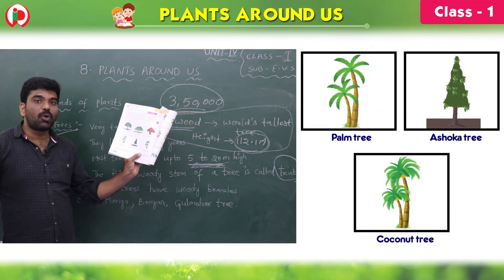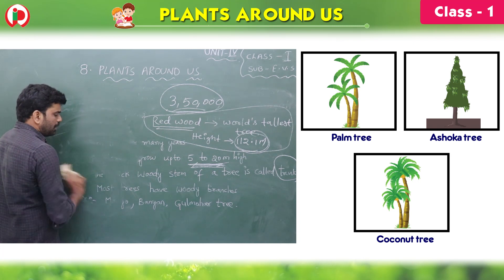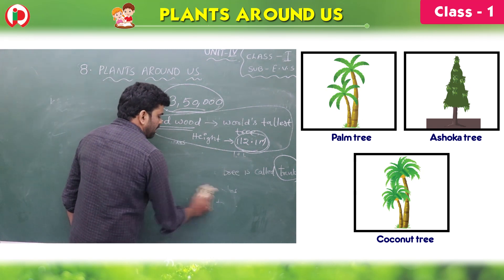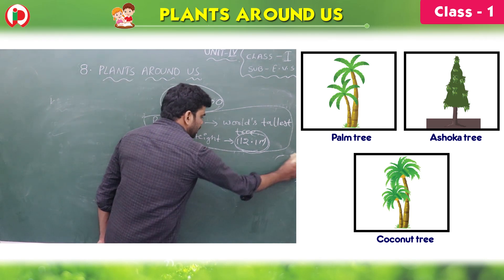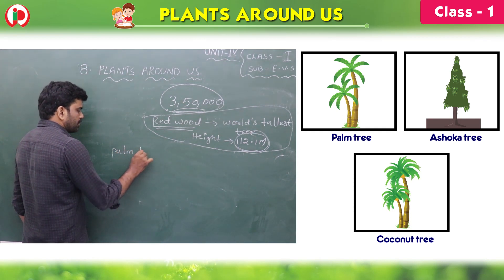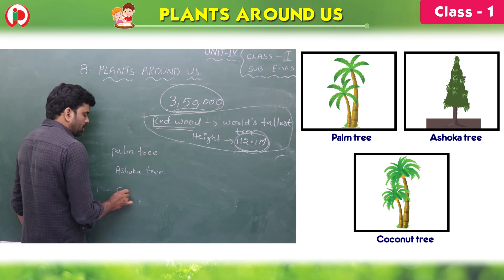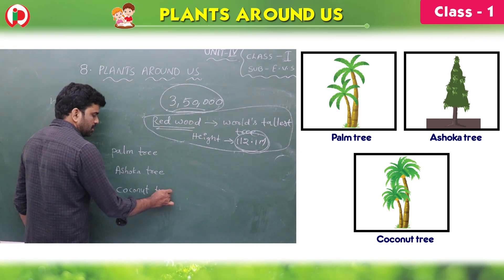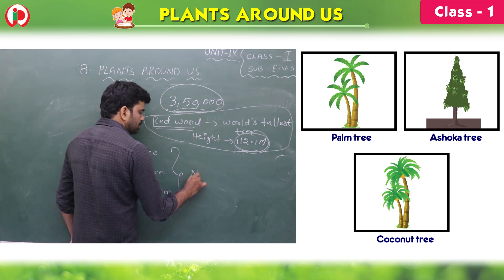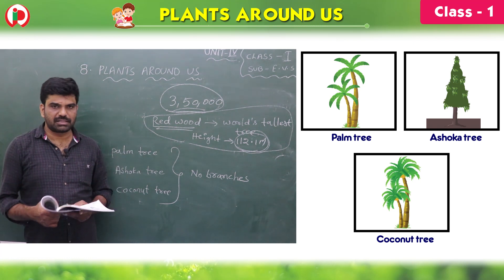Palm tree, Ashoka tree, and coconut tree — these trees have no branches. Palm tree doesn't have branches, coconut tree and even Ashoka tree also don't have branches. Palm tree, Ashoka tree, and coconut tree have no branches.